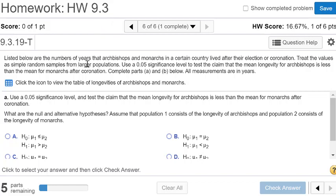It says listed below are the number of years that archbishops and monarchs in a certain country lived after their election or coronation. They want us to treat the values as simple random samples from larger populations and use a 0.05 significance level to test the claim that the mean longevity for archbishops is less than that for the monarchs.